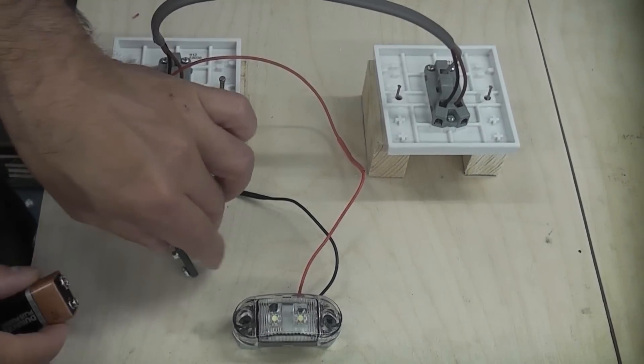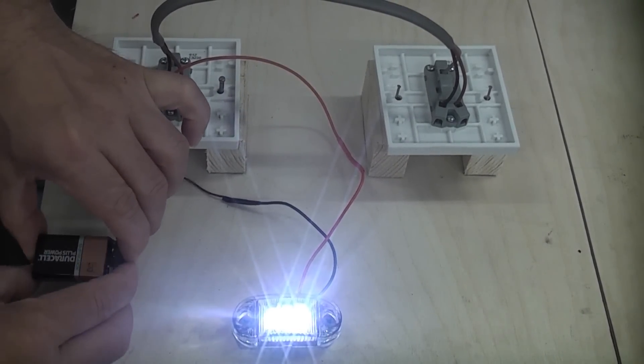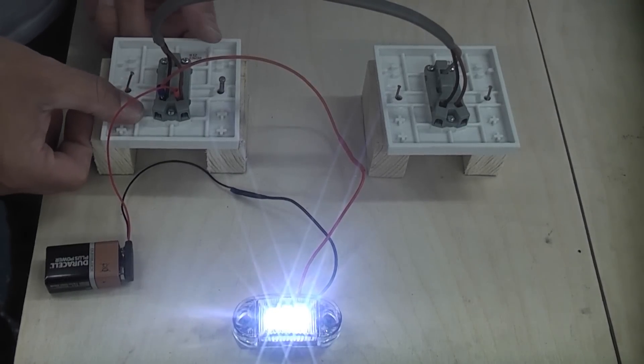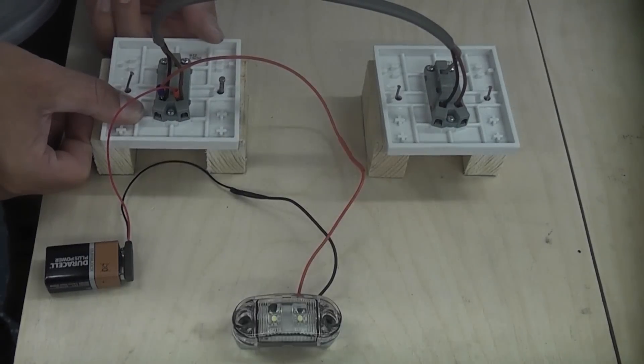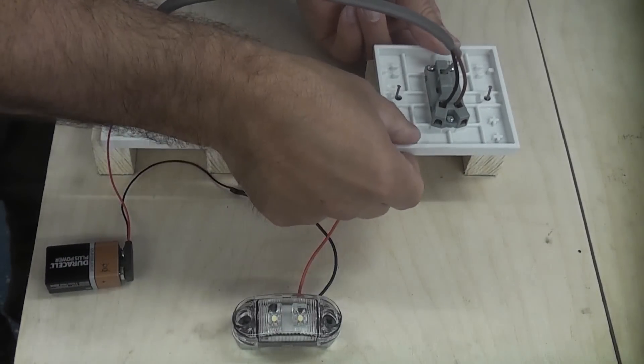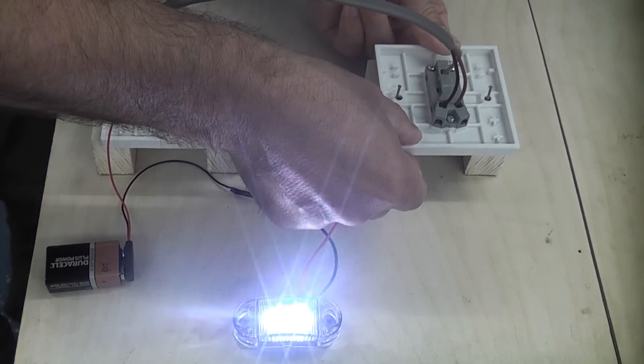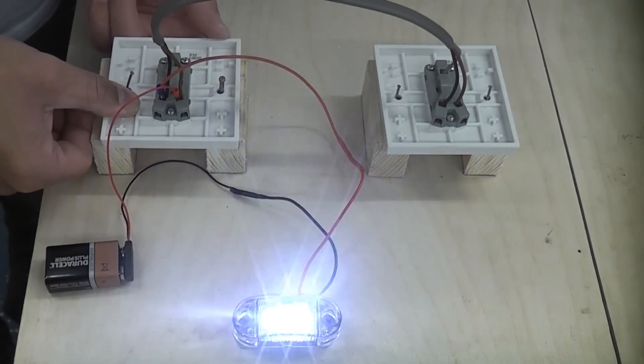We can now reconnect the power and you can see that the switch is illuminated. If we flick switch one that then goes off, so that can be controlled from switch one. If we then flick switch two it can also be controlled from switch two. You can also switch it on at switch two and switch it off at switch one.